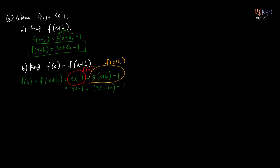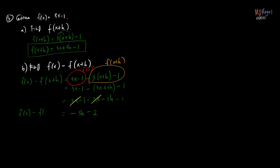So simplifying further, that's going to be 3x minus 1, minus 3x minus 3h minus 1. Combining like terms, 3x minus 3x is 0. Combining the constants, negative 1 and negative 1 give negative 2. So the answer is 3h minus 2. This is f of x minus f of x plus h.